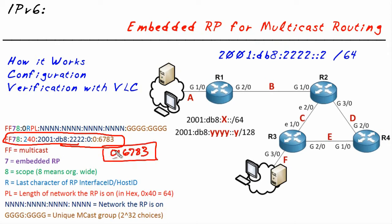We simply need to tell R2 — configure him saying you are the rendezvous point. Then R1, R3, R4, and everybody else, if they see this multicast group address, will automatically know who that rendezvous point is. They'll extract it and use R2 as the rendezvous point.